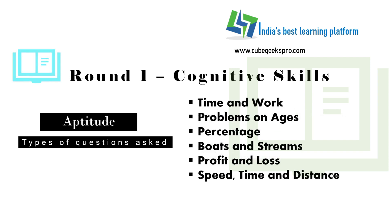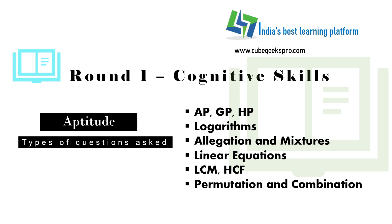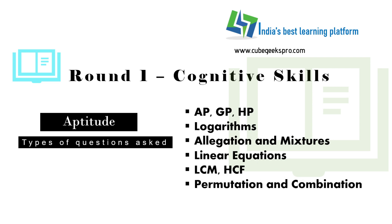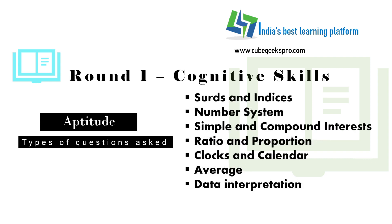In the aptitude section of the cognitive round, questions are based on time and work, problems on ages, percentages, boats and streams, profit and loss, speed-time and distance, AP-GP, logarithms, allegation and mixtures, linear equations, LCM, HCF, permutation and combination, surds and indices, number system, simple and compound interest, ratio and proportion, clocks and calendar, averages and data interpretation.